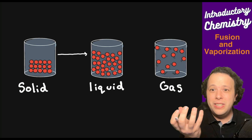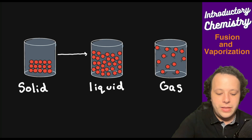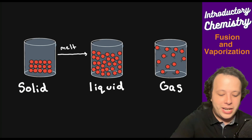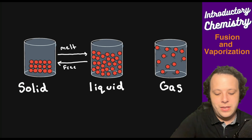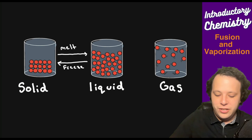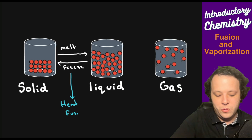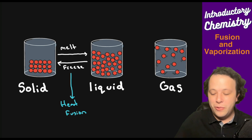If you take an ice cube and hold it in your hand, it's going to melt. If you take your melted water and put it back in the freezer, that liquid is going to freeze. Whenever we have these phase changes between solid and liquid, this is where the heat of fusion is going to be used.